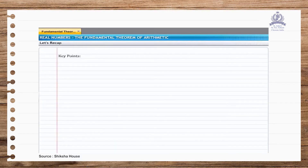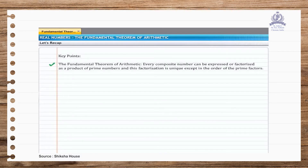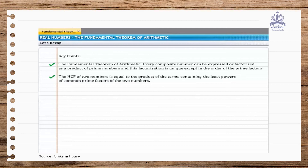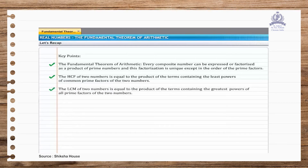You've reached the end of this section. The fundamental theorem of arithmetic states that every composite number can be expressed as a product of prime numbers and this factorization is unique except in the order of prime factors. The HCF of two numbers equals the product of terms containing the least powers of common prime factors. The LCM equals the product of terms containing the greatest powers of all prime factors. The product of two positive integers equals the product of their HCF and LCM.